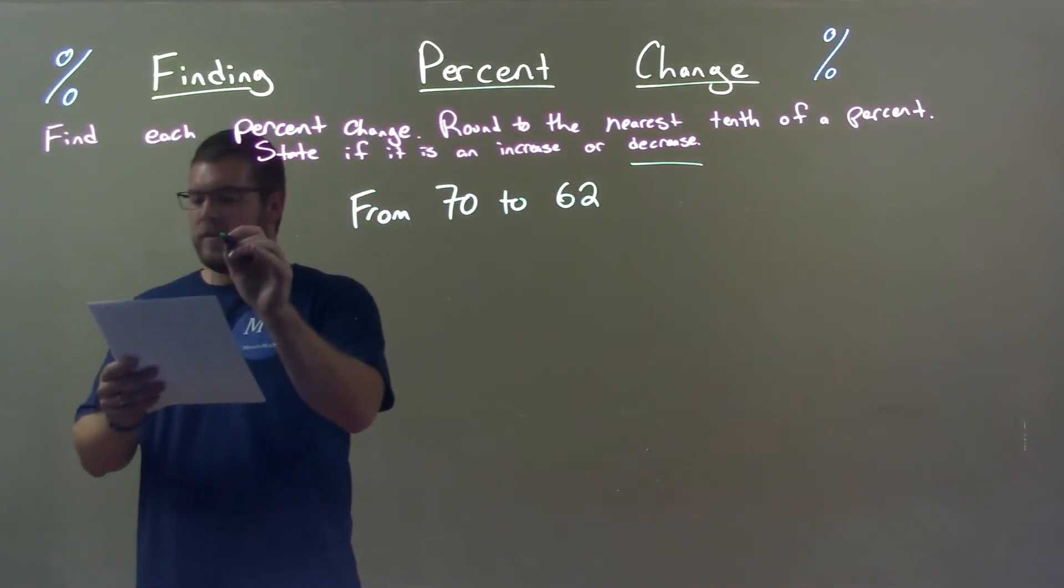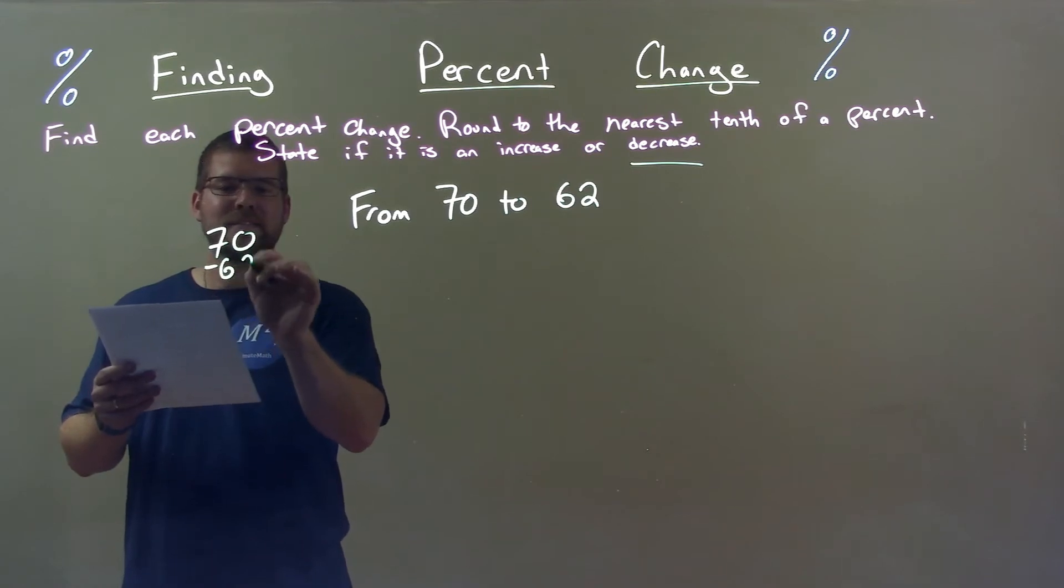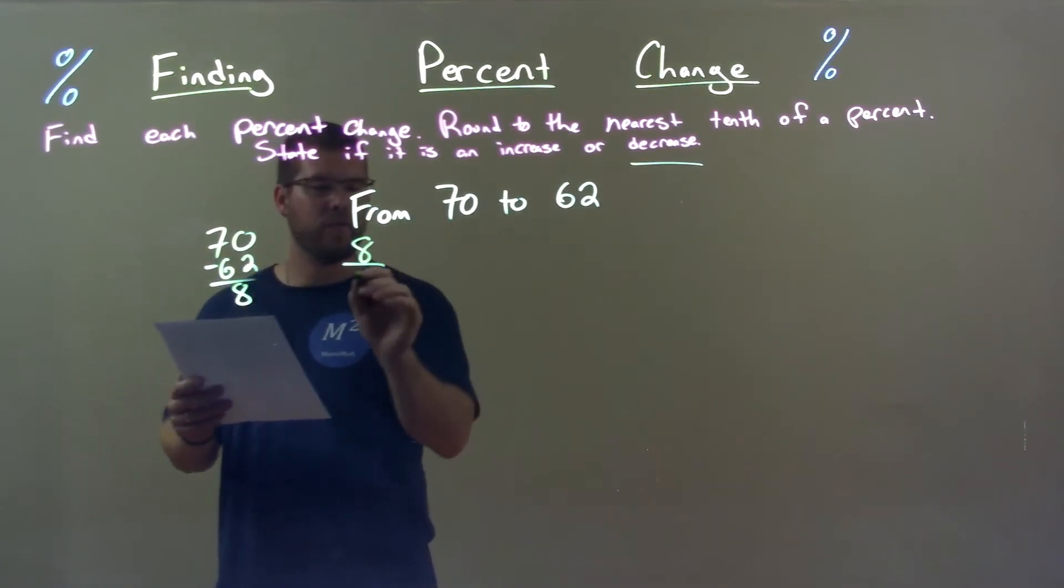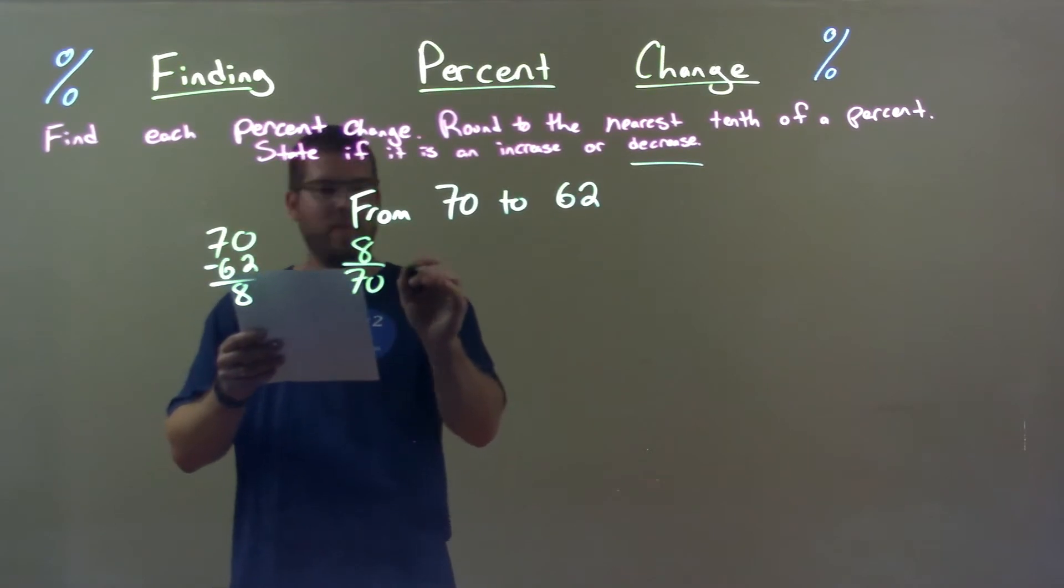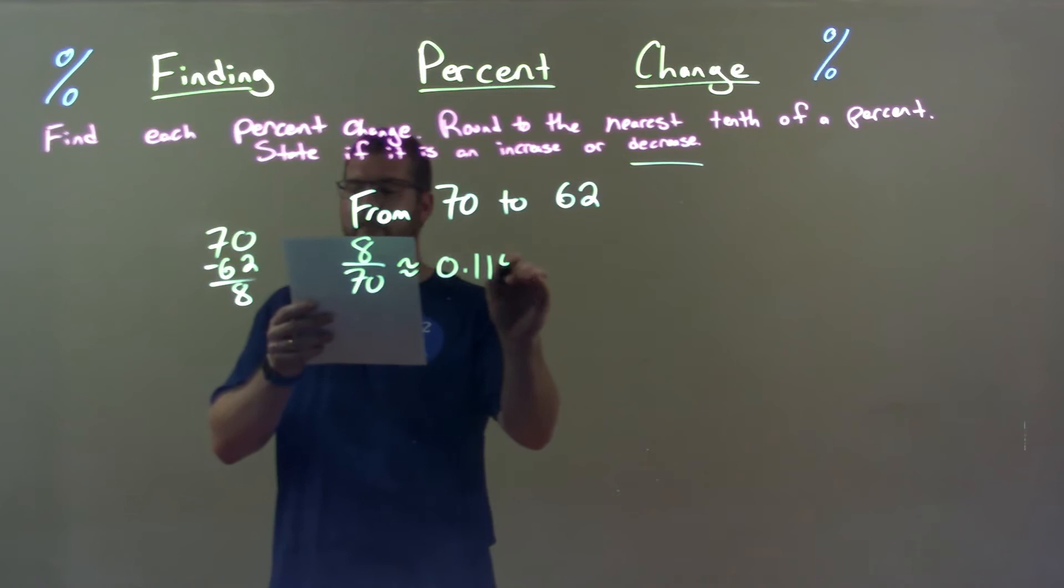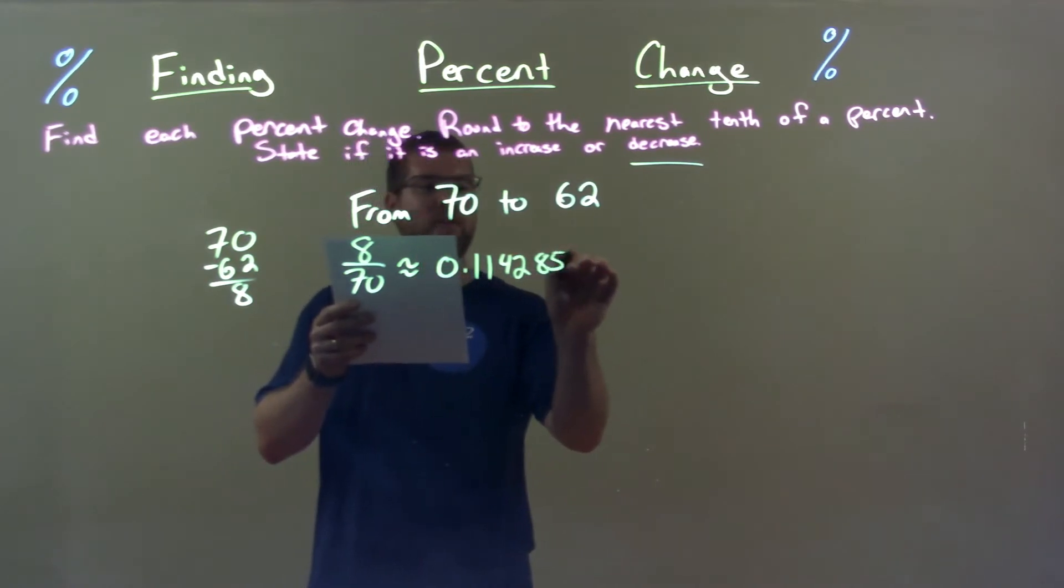Now, find the difference between the two. 70 minus 62 is 8. We take that number and divide it by the first number, which is 70. That gives me approximate decimal 0.1142857.